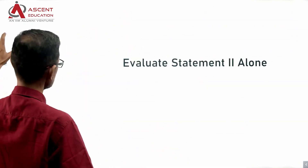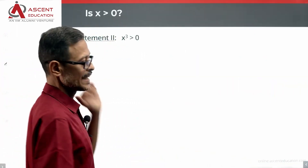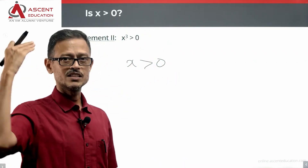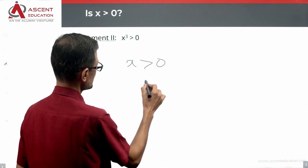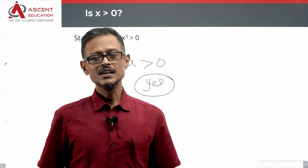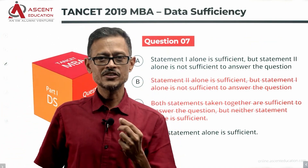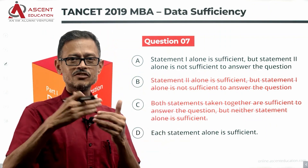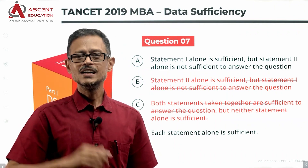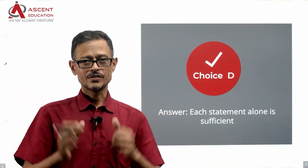Looking at statement two: x cubed is greater than zero. If x cubed is greater than zero, then x will also be greater than zero. We are giving a definite yes as the answer — x greater than zero. So statement two has also given us a definite answer; two alone is also sufficient. Statement one is sufficient, statement two is sufficient, so we eliminate answer option A. D is the answer to this question — each statement alone is sufficient.